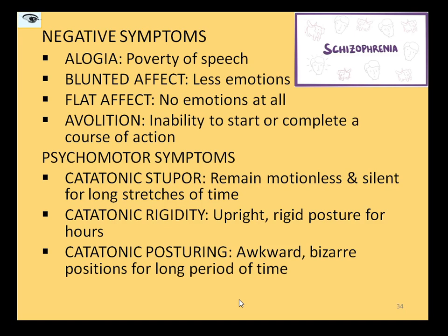We are done with the positive and negative symptoms, and now we have the psychomotor symptoms. Psychomotor symptoms are all about making extremely weird or odd gestures, and there are various extreme forms that a person can take in terms of their own way of functioning — even in terms of how their body begins to function. That entire phenomenon of depicting these extreme forms is called catatonia, and we have various forms of catatonia.